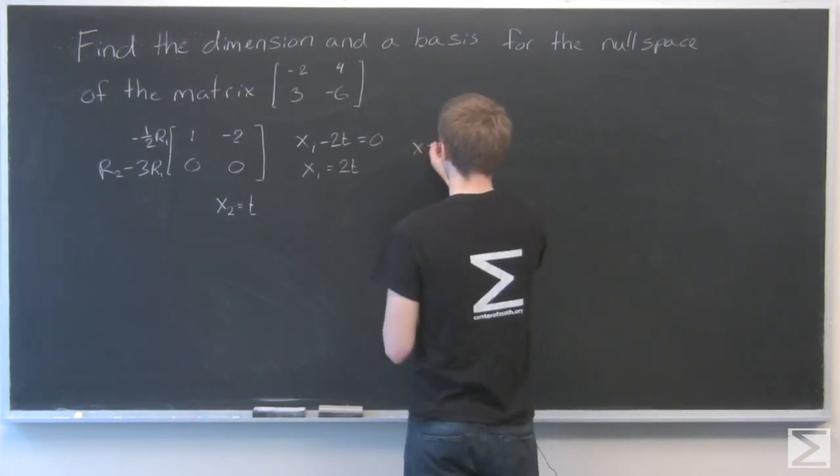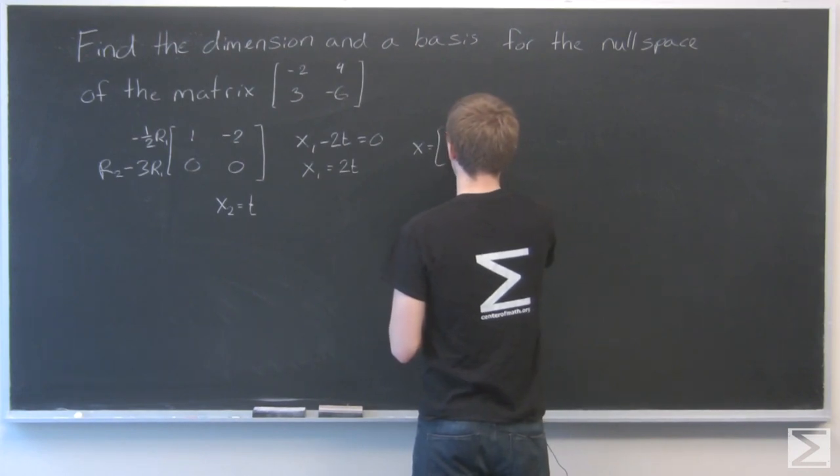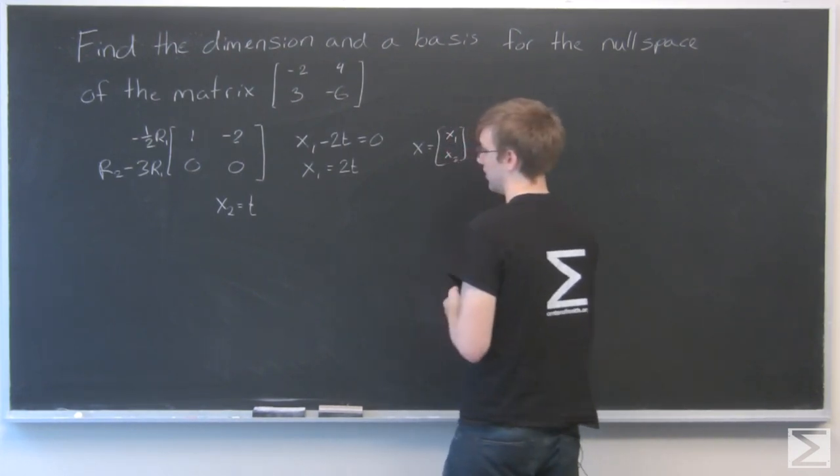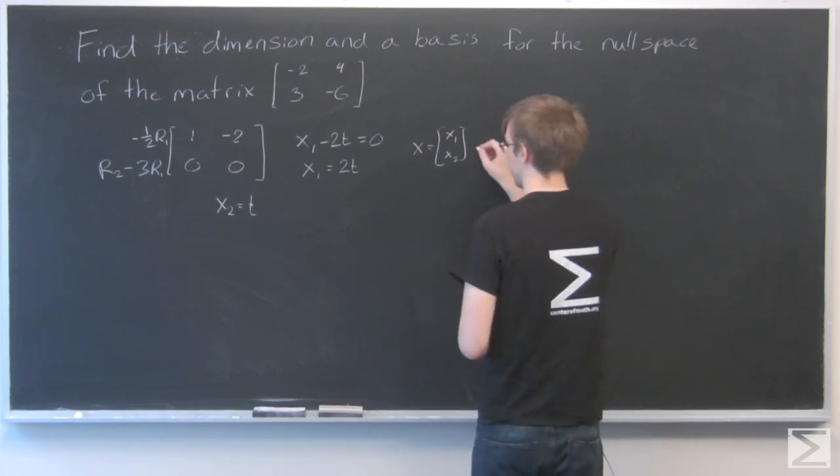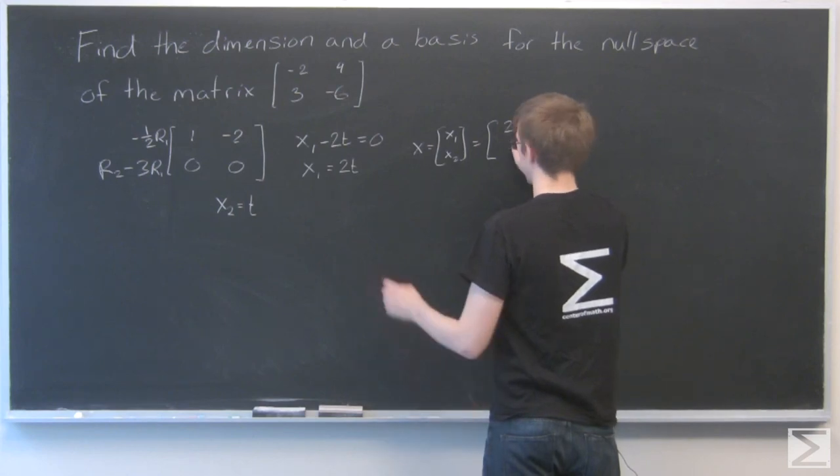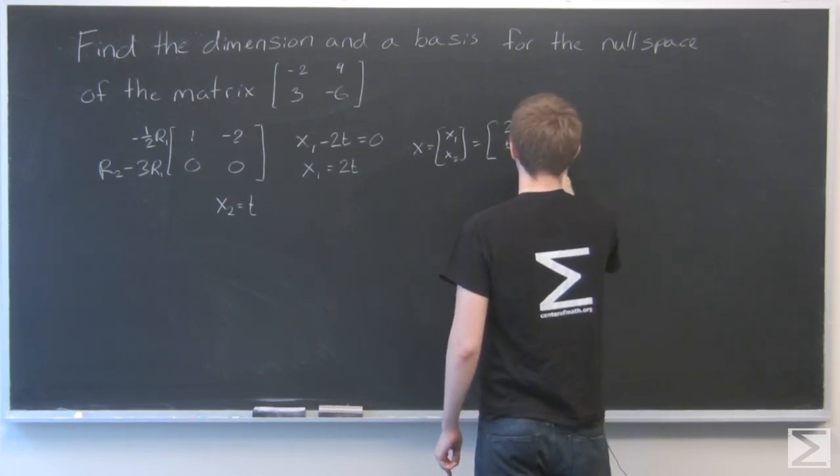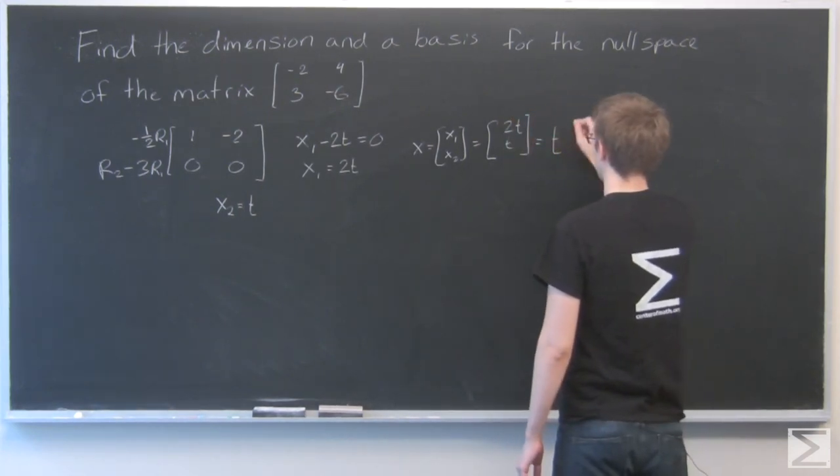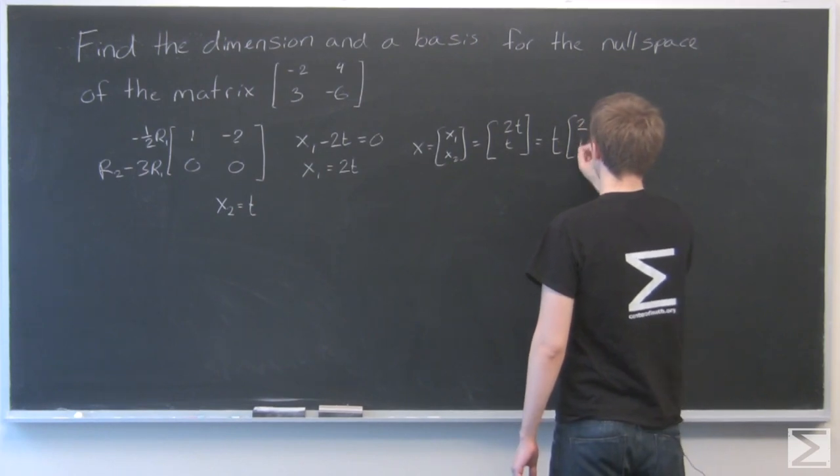So now if I have that vector x that we were talking about earlier, where it's x1 and x2, my solution is going to be x1 is 2t and x2 is t, which we can pull out a t to write t times 2, 1.